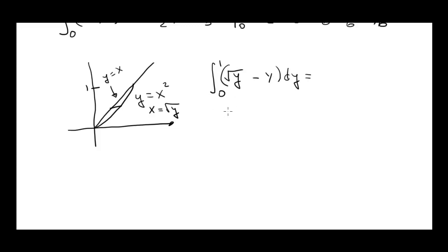Square root of y is y to the 1 half. So the integral of y to the 1 half is going to be y to the 3 halves divided by 3 halves minus 1 half y squared evaluated from 0 to 1.